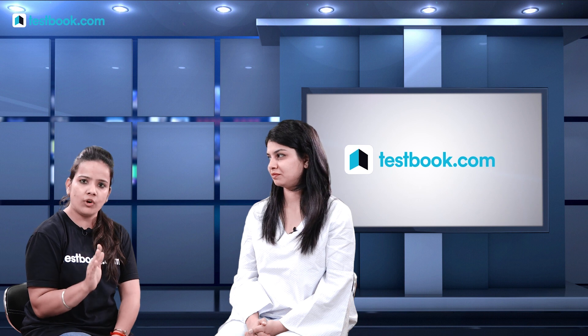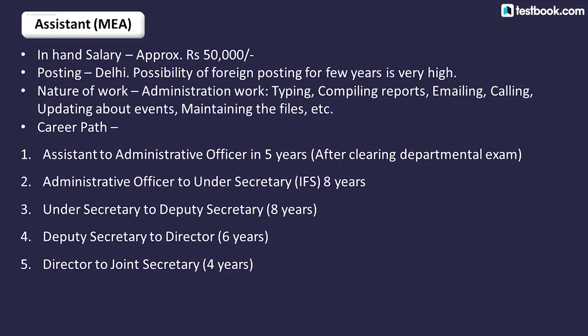The third job under the 4600 grade is Assistant in MEA — the Ministry of External Affairs. This is the best job if you want to settle abroad or travel to foreign countries. You will be posted to embassies and will need to learn the local language of the country you are appointed to. The first promotion is slow — 10 to 11 years. The department is under the Ministry of External Affairs.